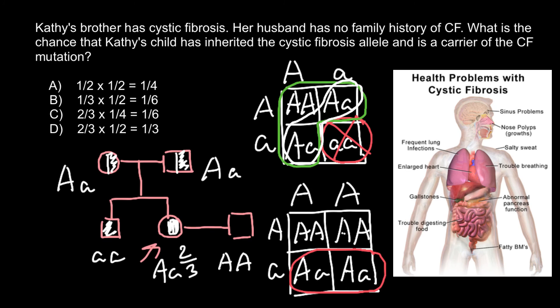So what we have is a 2/3 probability for Katie to be a carrier, and a 1/2 probability — if she is a carrier — that their child will also be a carrier. We multiply these two probabilities together: 2/3 × 1/2. This gives us answer D. The correct answer is D.